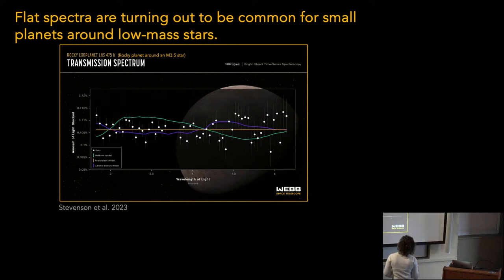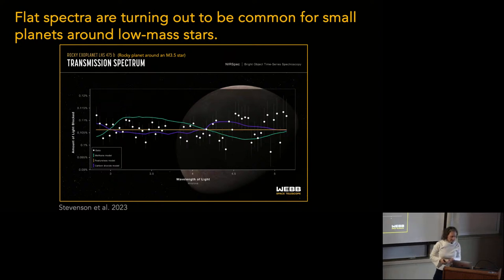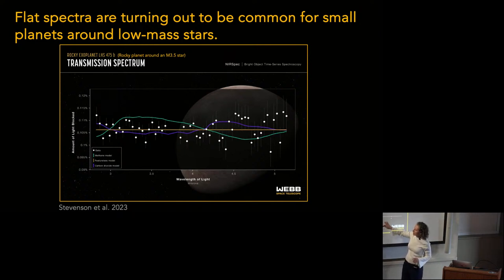Are there error bars on those points? Yes, and they're pretty big — consistent with the scatter. The error bars are very thin but they are there. So are those models actually ruled out, the green and the purple? According to the paper by Kevin Stevenson et al., the green one is ruled out. The purple one is still possible, but also consistent with a flat line.